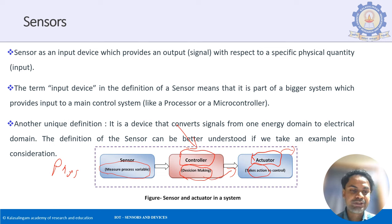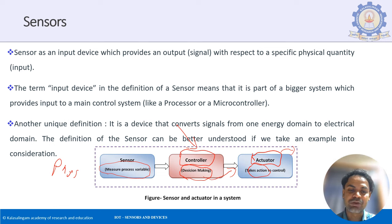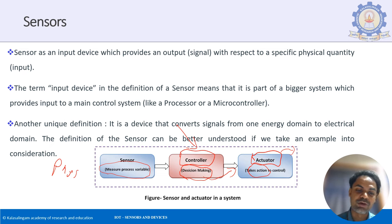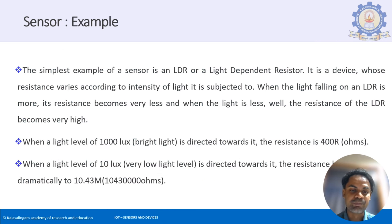To summarize: a sensor converts a physical quantity to an electrical quantity. This electrical quantity is processed, a decision is taken, and it is converted back to a physical quantity which is displayed either in the form of a display or a motor.